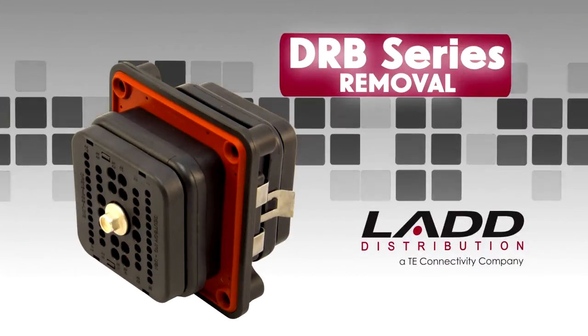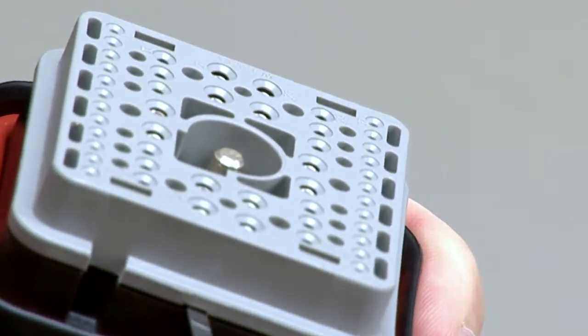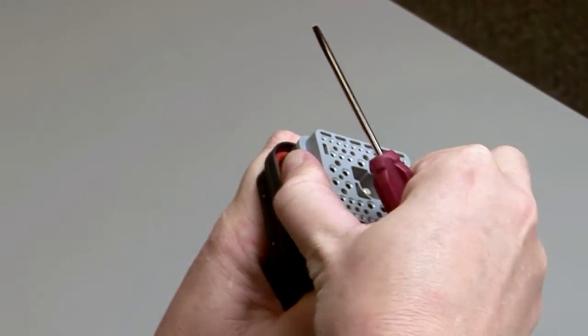DRB contact removal. Remove the wedge locks by using a screwdriver. Pull the wedge locks straight out.